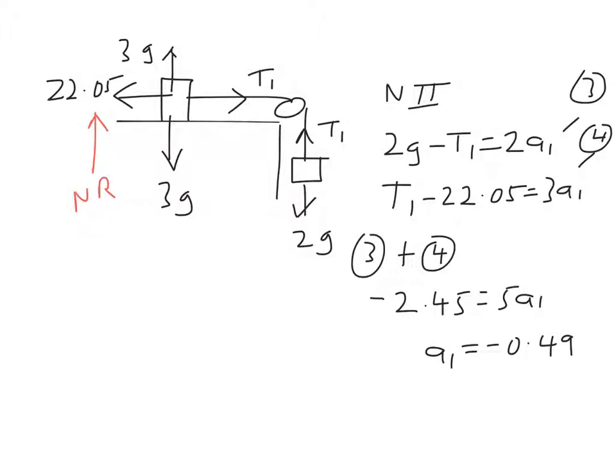So now we can use SUVAT again. The distance it's now got to move is 1.5. The initial speed is the final speed from before, 4.427. The final speed, that's what we're trying to find out, let's call it v dashed. a is minus 0.49, not interested in t, so I'm going to squash this in. v squared is u squared plus 2as.